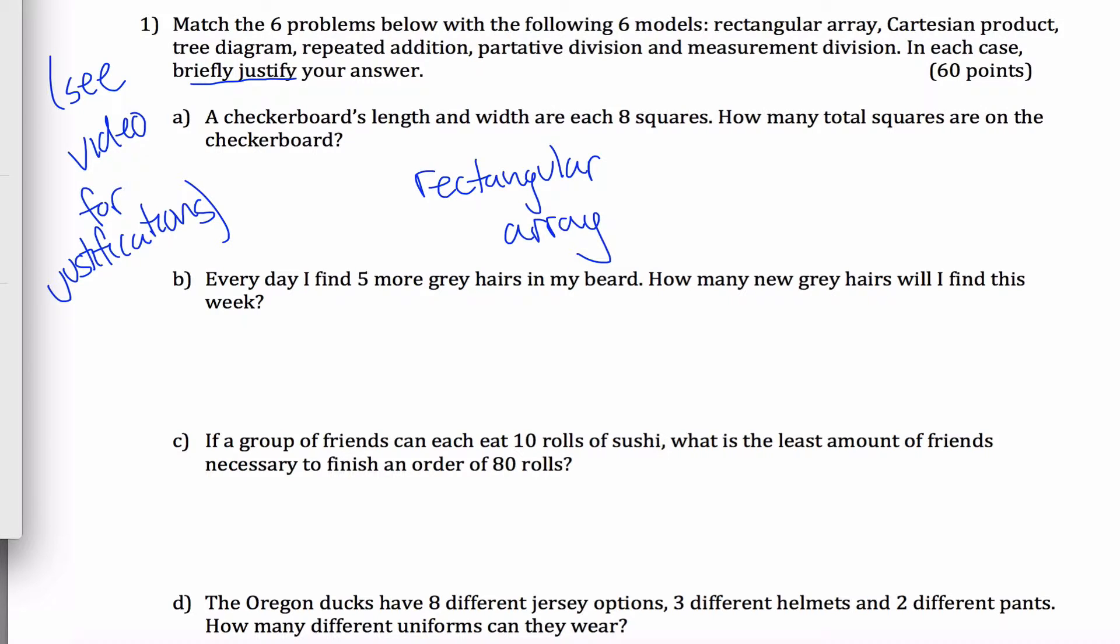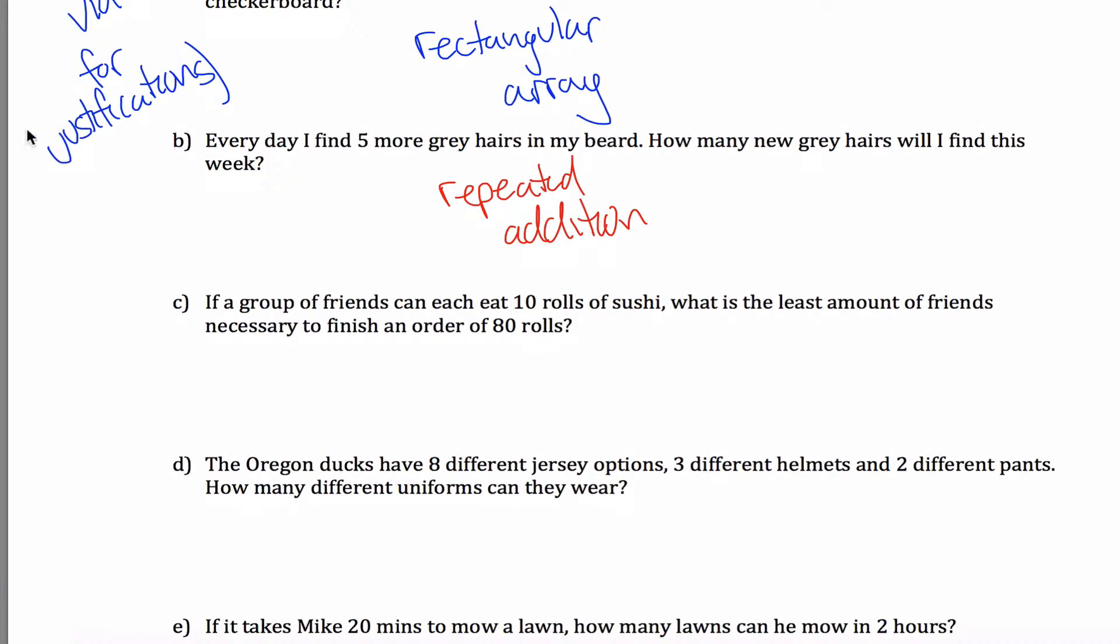This next one. Every day I find five more gray hairs in my beard. How many new gray hairs will I find this week? I thought of this as repeated addition. And that came from you got five on Monday and five more on Tuesday, so now I'm up to 10, and five more on Wednesday, so I'm up to 15, and so on. So for me, repeated addition makes the most sense here.